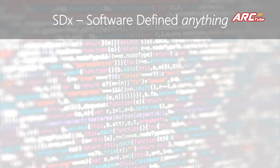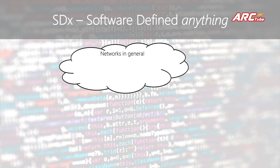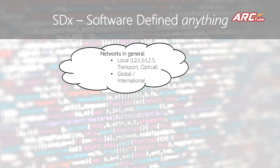When you have X, you can actually replace X with many things. The first one is networks in general. In a typical telco environment you have local networks and also international networks. Inside a local network you can identify networks related to layer 2 protocols on the OSI stack like Ethernet networks, and also layer 3 type of networks running on IP or Internet Protocol. And even layer 2.5 networks, for example multi-protocol label switching or MPLS. We also have transport networks, optical networks, and many other types of networks in a telco environment, as well as global and international networks.